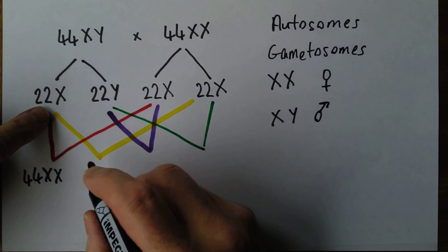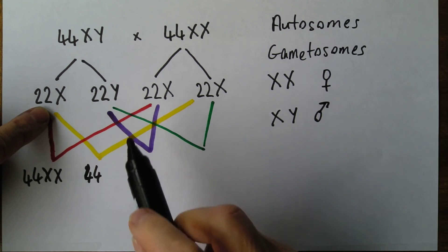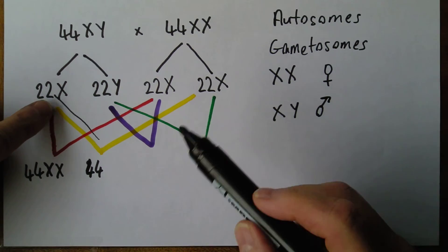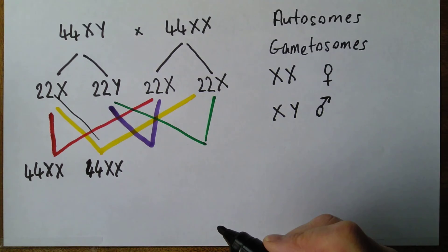But if it was that one there, 22 and 22 gives us 44. And again, that one contains an X and that one contains an X. So that's XX again. So that's going to be a baby girl.